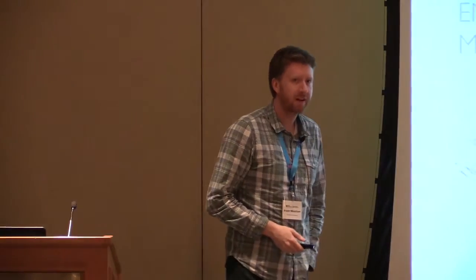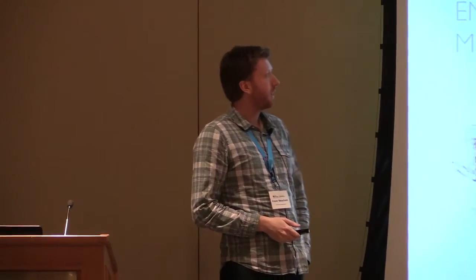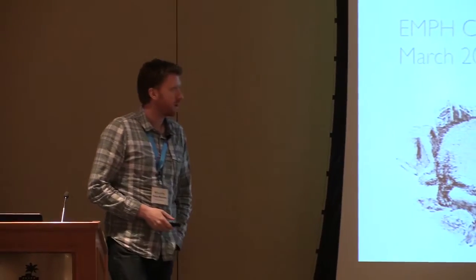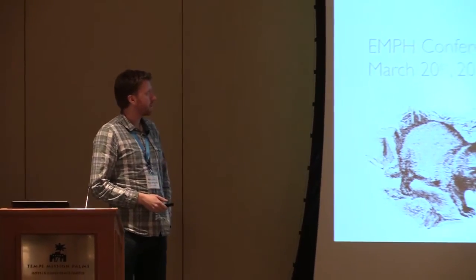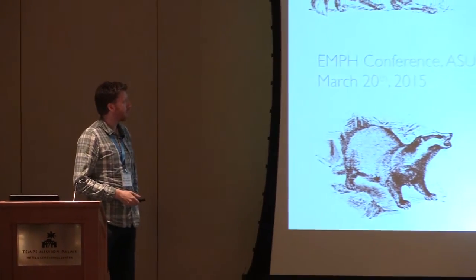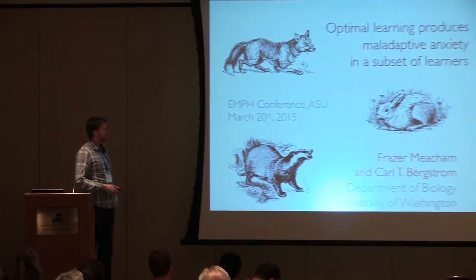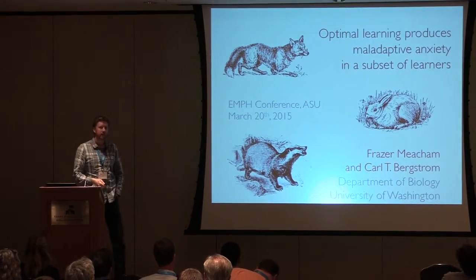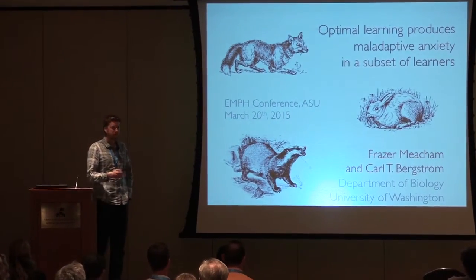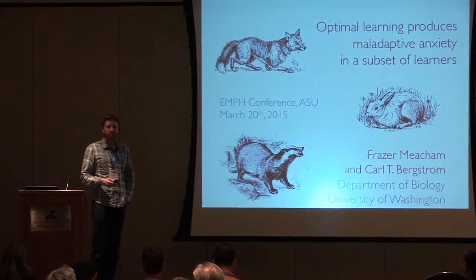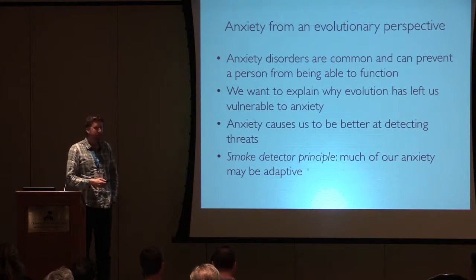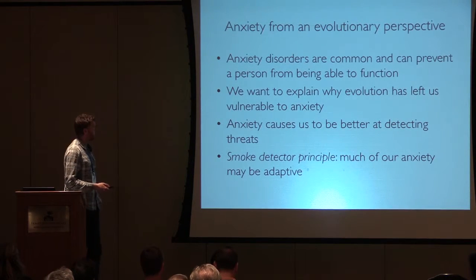Thanks everyone. I'm a grad student at the University of Washington. I'm really honored to be here. I'm going to talk to you about some mathematical modeling work that Carl and I have done. We're trying to understand how maladaptive levels of anxiety might result among some members of a population, even if everyone is behaving optimally.